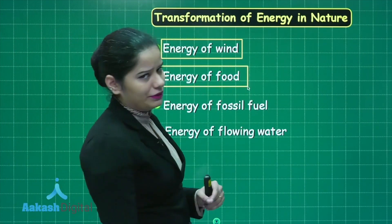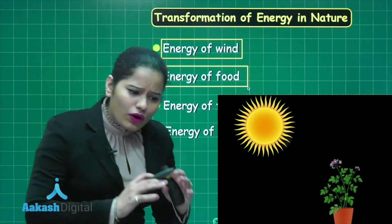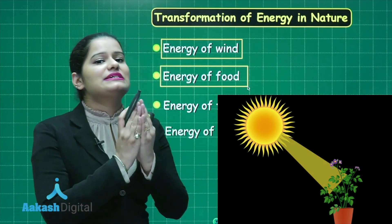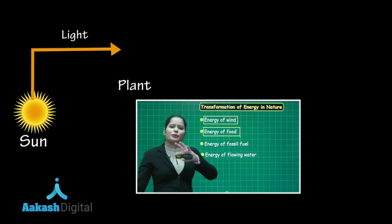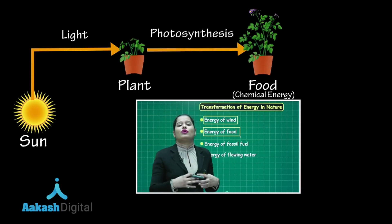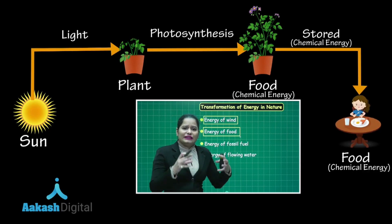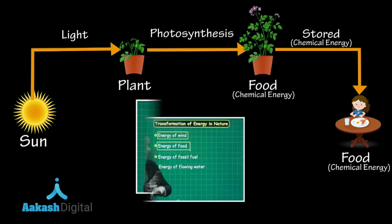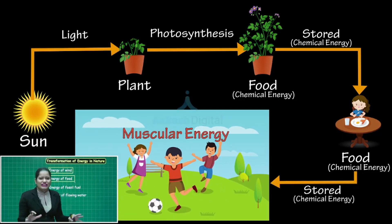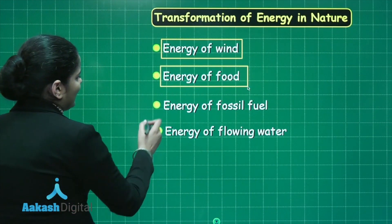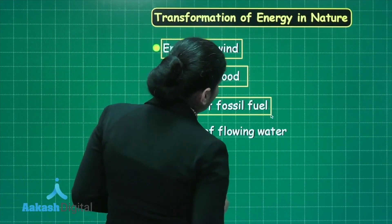Moving on to the next type of transformation: energy from food. All plants prepare their food by the process of photosynthesis, and for that they require sunlight. They utilize sunlight to prepare their food, which gets stored in them as chemical energy. When humans and animals eat those plants, that chemical energy gets stored in them as well. When we carry out various activities, the energy required comes from the food we eat, and the energy in that food originates from solar energy.